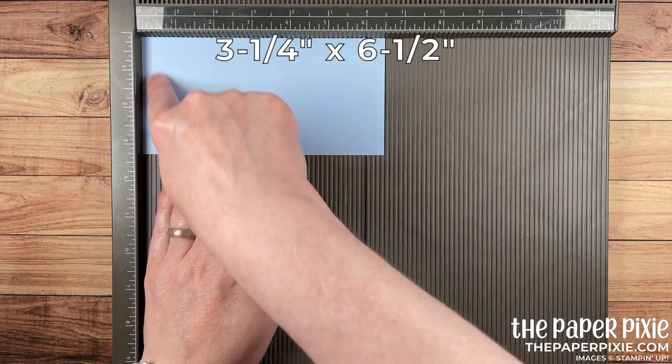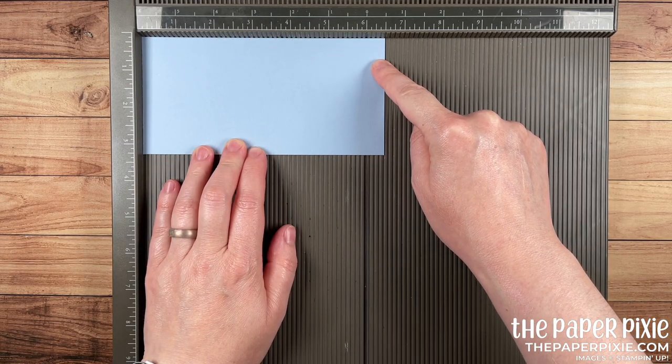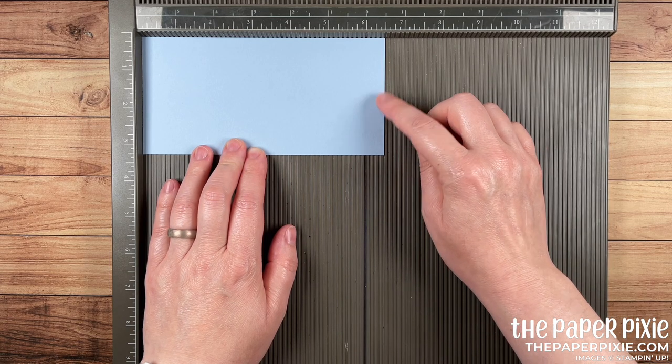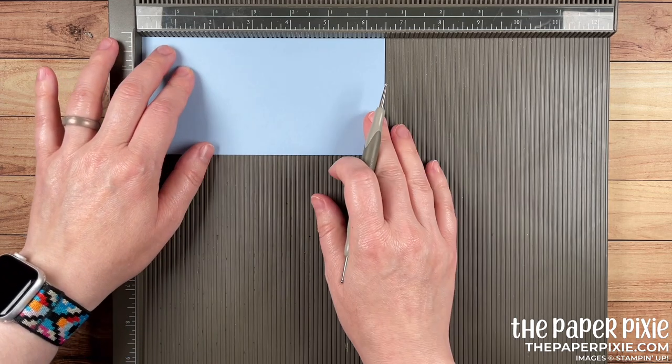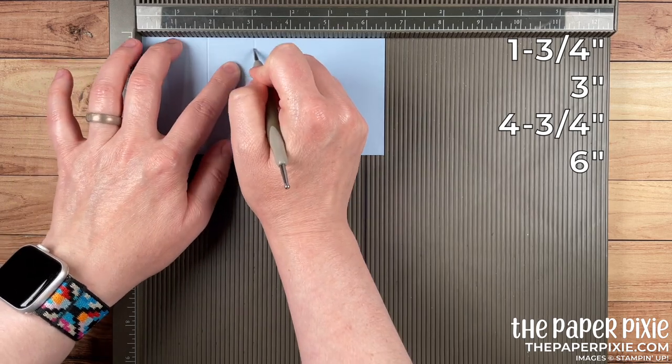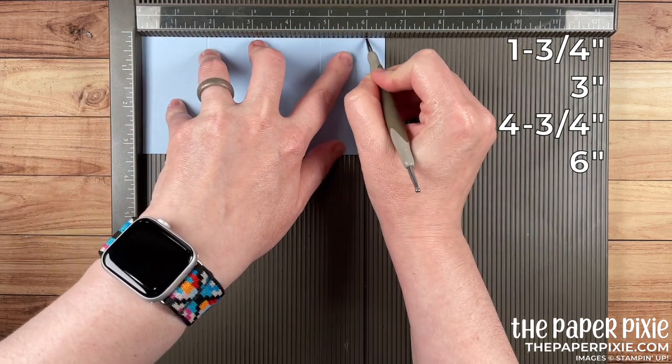We are starting with a 3 1⁄4 inch by 6 1⁄2 inch piece of Seaside Spray cardstock. You can get three of these out of a sheet of 8 1⁄2 by 11. And along the 6 1⁄2 inch side, we're going to score this at 1 3⁄4, 3, 4 3⁄4, and 6.